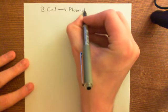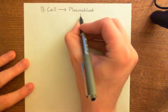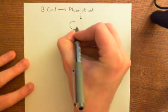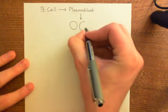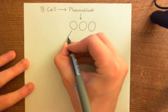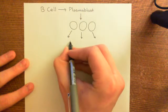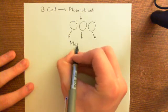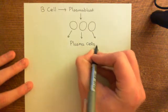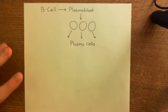The plasmablast divides and divides to produce an entire population of plasmablasts. You're going to get multiple plasmablasts. And then all of these plasmablasts are going to differentiate into plasma cells, which will leave the lymph node and go into the bloodstream.